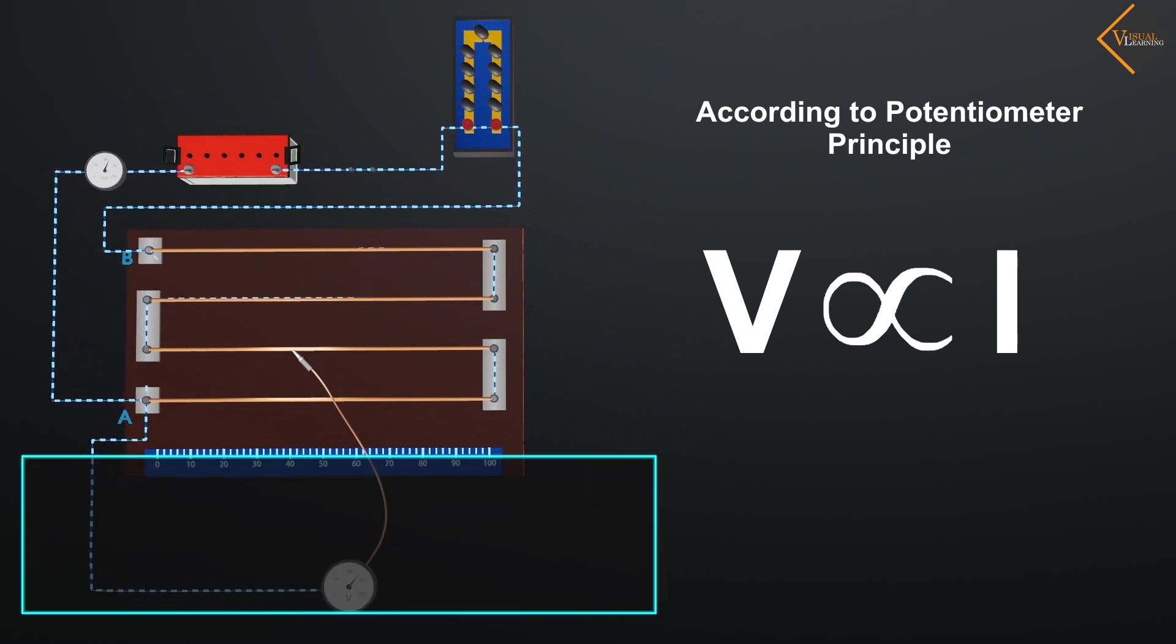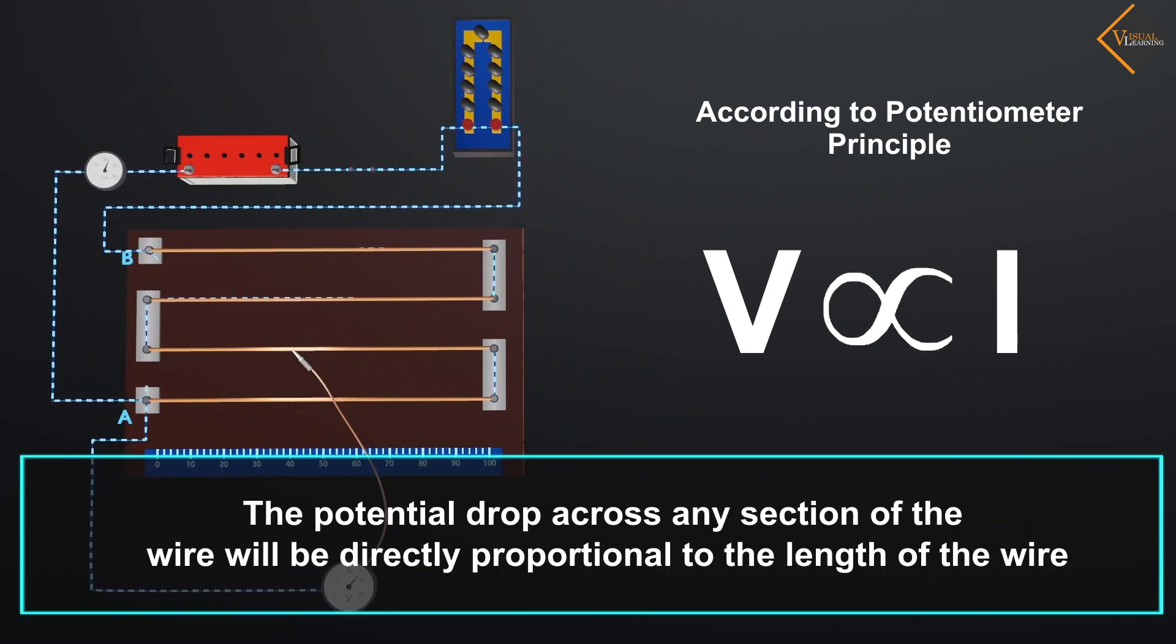The basic principle of the potentiometer states that the potential drop across any section of the wire will be directly proportional to the length of the wire.